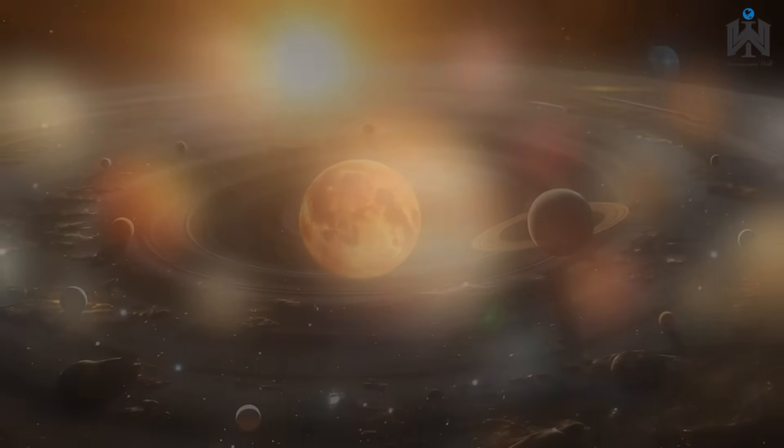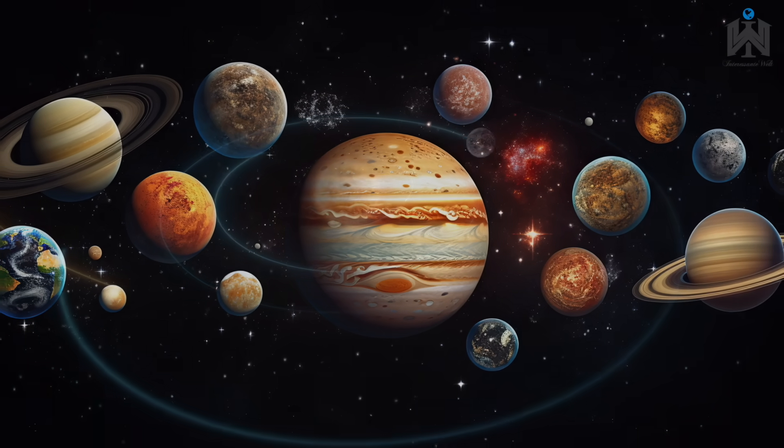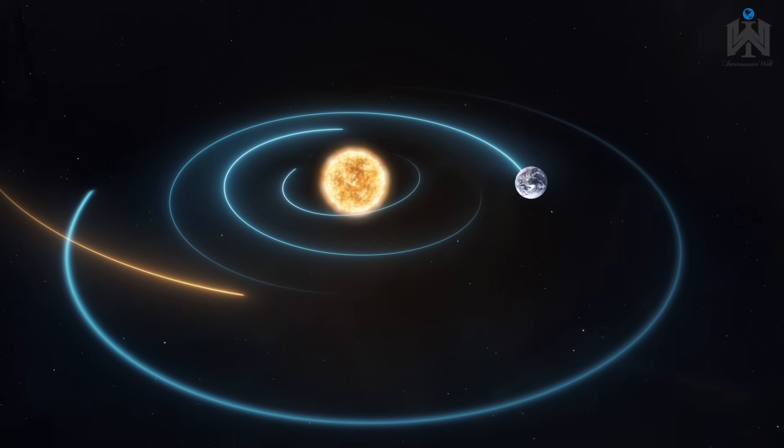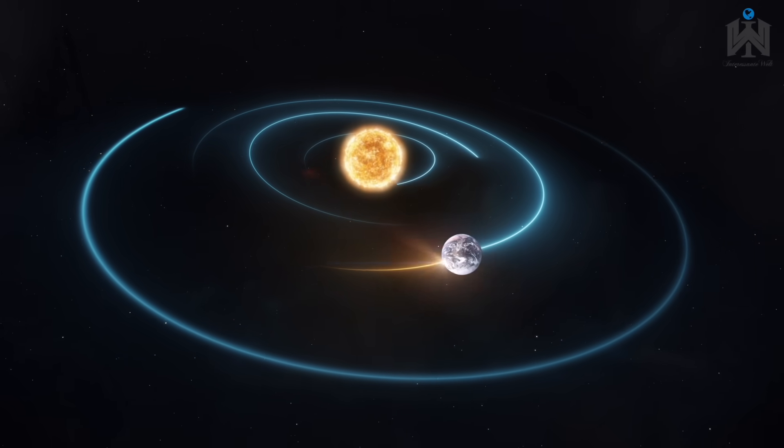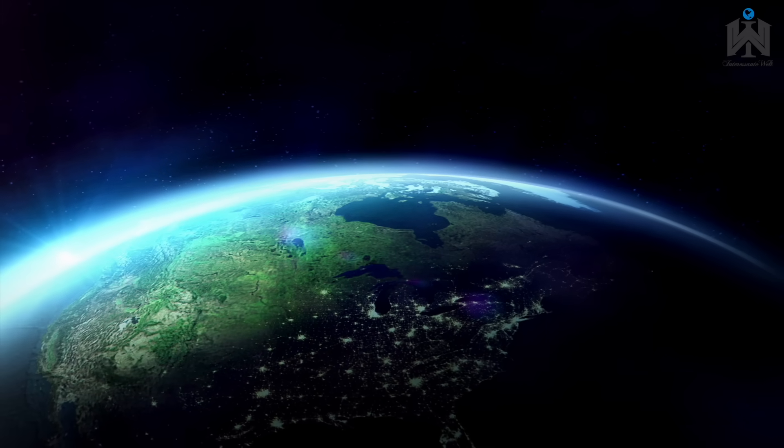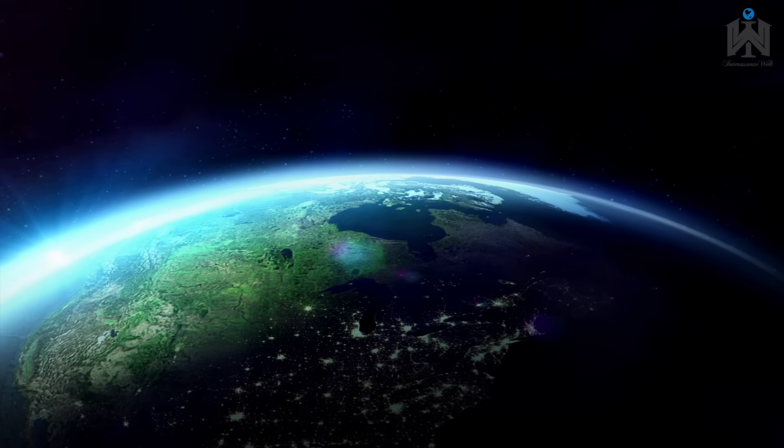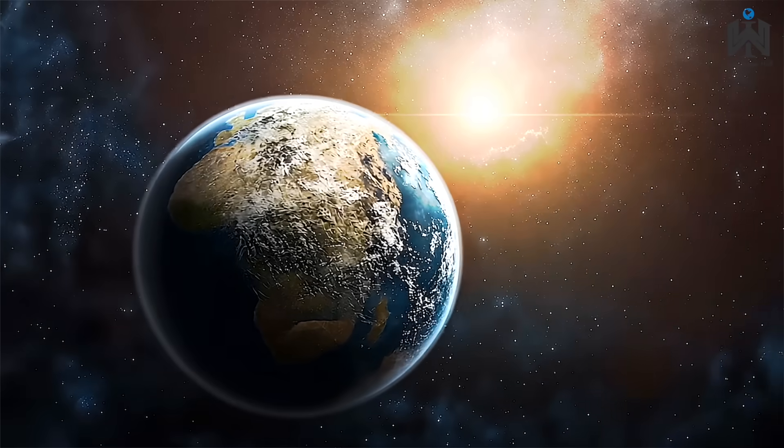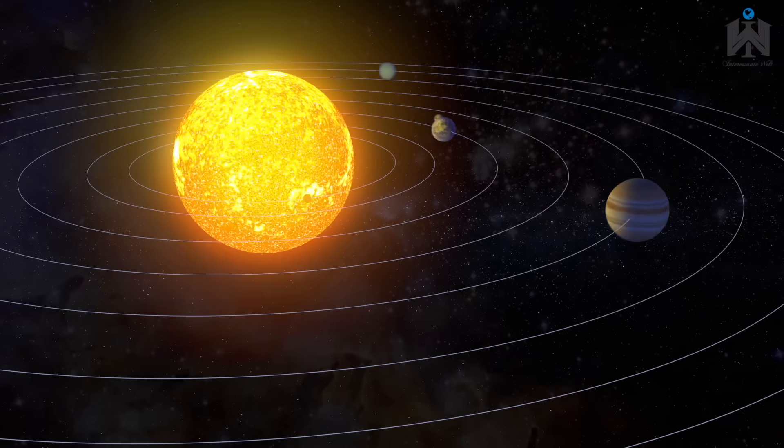Die Planeten fliegen nicht einfach willkürlich im Weltall herum. Die erste Erkenntnis: sie befinden sich auf einer Ebene. Jeder Planet umkreist in einer elliptischen Bahn die Sonne mit einer eigenen Geschwindigkeit und rotiert dabei selbst um die eigene Achse. Die Erde rotiert in 24 Stunden einmal um die eigene Achse und umkreist die Sonne in rund 365 Tagen.